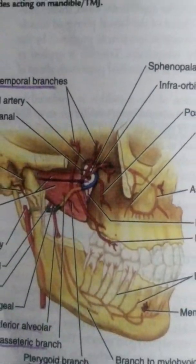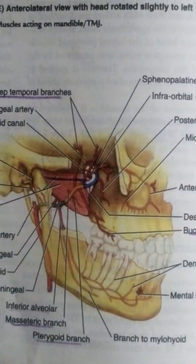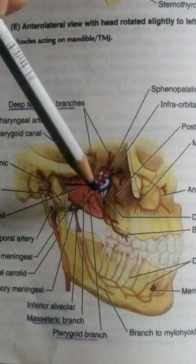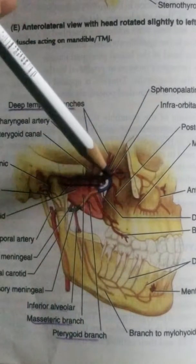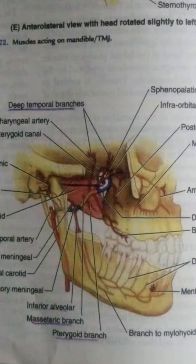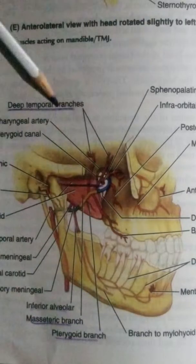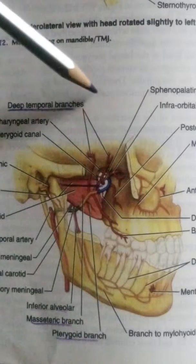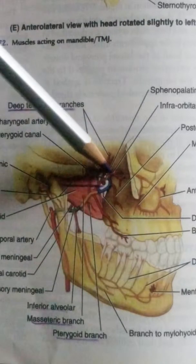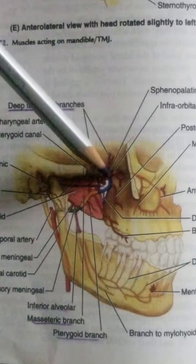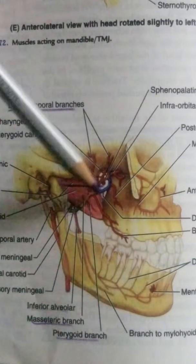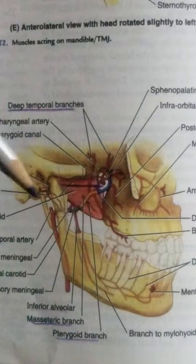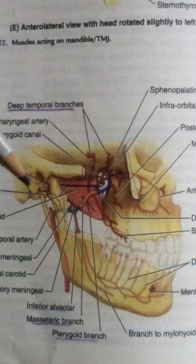I am going to cover the third part of the maxillary artery, which is the pterygopalatine part. The blue color shown here is the third part of the maxillary artery, and it enters the pterygopalatine fossa through the pterygopalatine fissure.